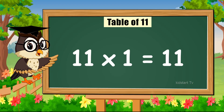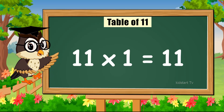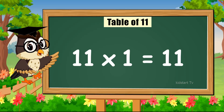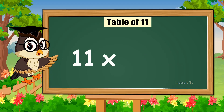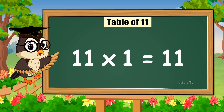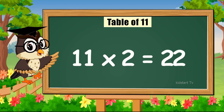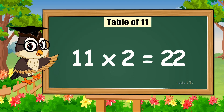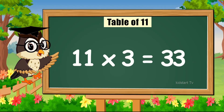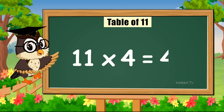Hello everyone, we are going to sing together today. Sing with me the table of eleven. Come on! Eleven times one is eleven. Eleven times two is twenty-two. Eleven times three is thirty-three. Eleven times four is forty-four.